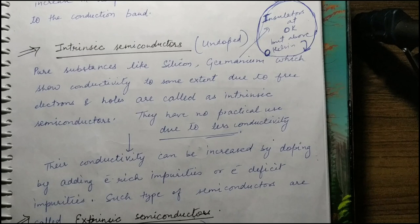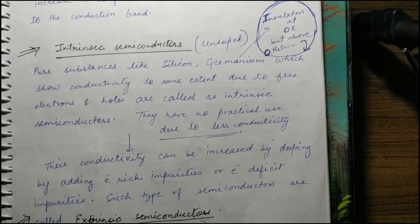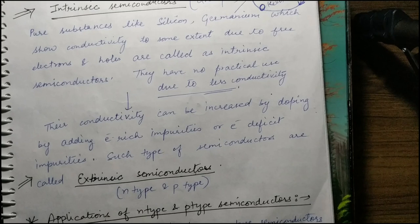Pure silicon and germanium are intrinsic semiconductors — they behave like insulators at 0 K and are undoped. Above 0 K, if temperature increases, their conductivity becomes somewhat possible, but it is still too low for practical use. So doping is done — electron-rich or electron-deficit impurities are introduced — creating extrinsic semiconductors (p-type or n-type). For temperature effects: in metals, conductivity decreases with temperature because positive ions (kernels) start moving. In semiconductors, conductivity increases with temperature because more electrons can jump into the conduction band.